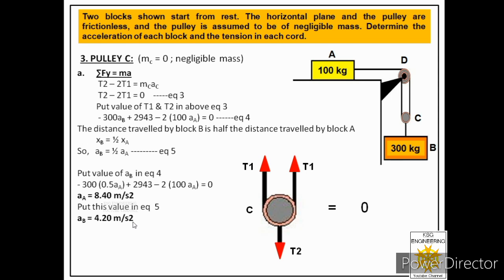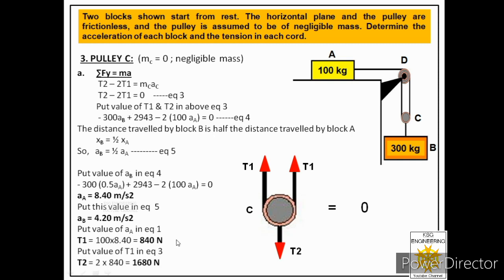To find the tensions, we substitute aA = 8.40 m/s² into Equation 1: T1 = 100 × 8.40 = 840 N. Then substituting T1 into Equation 3 (T2 = 2T1) gives T2 = 1680 N. We have now found all the required answers: aA = 8.40 m/s², aB = 4.20 m/s², T1 = 840 N, and T2 = 1680 N. I hope this answer is clear to you. Thank you very much.